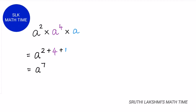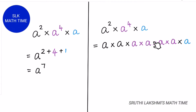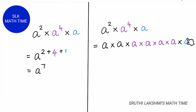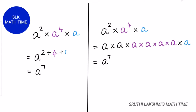If we want to check that this works, we can try the long way. a power 2 can be written as a into a; a power 4 can be written as a into a into a into a; and a can be written as a. So here the common base is a. Counting all the a's: 1, 2, 3, 4, 5, 6, 7 — so it's a power 7. As you see, both methods give the same answer.